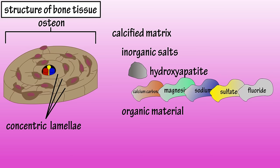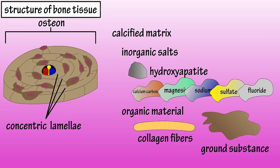The organic material is comprised of collagenous fibers and a gel-like ground substance containing protein and polysaccharides. The ground substance is important in providing support and adhesion between cellular and fibrous elements.